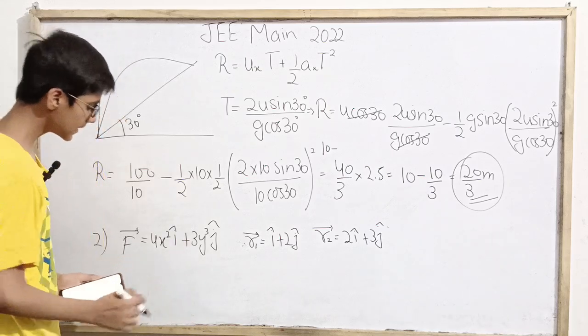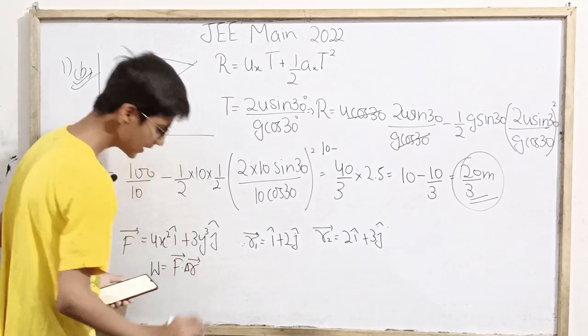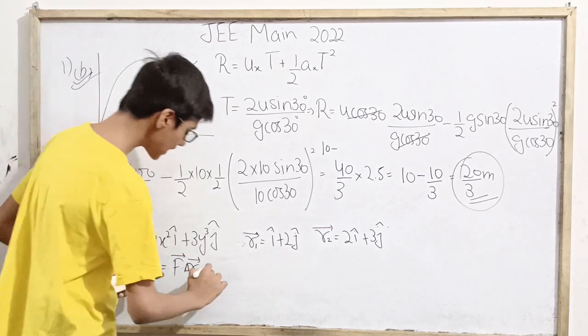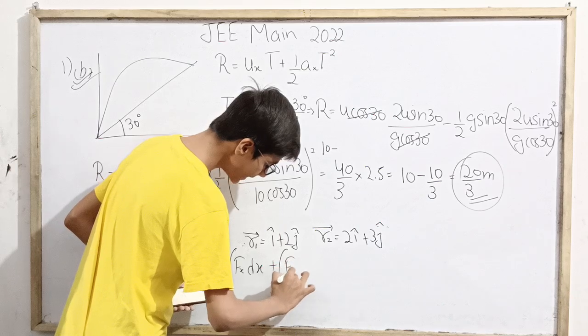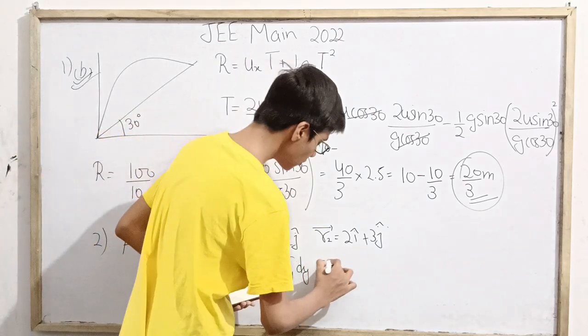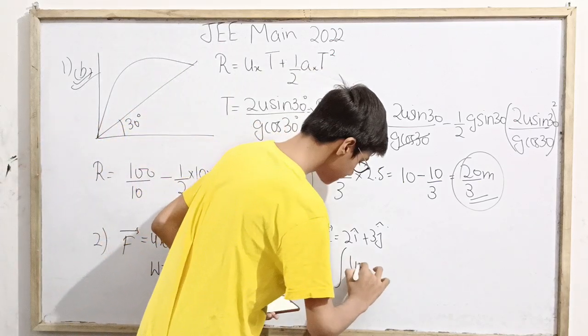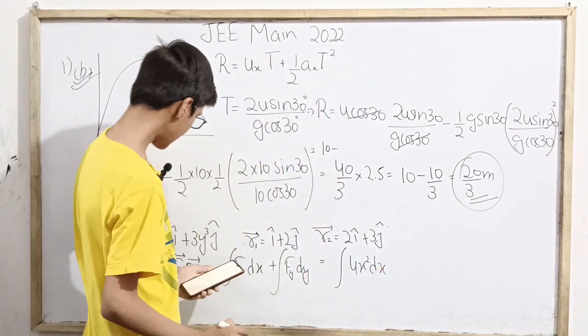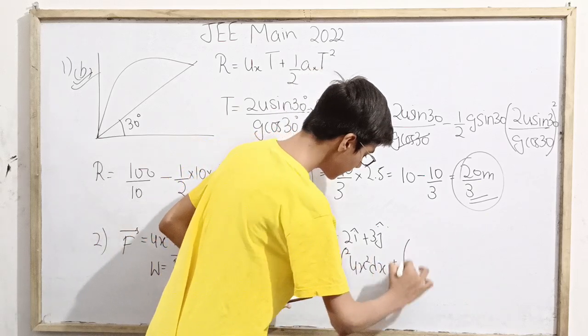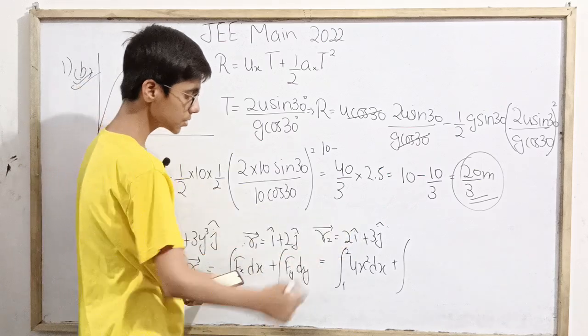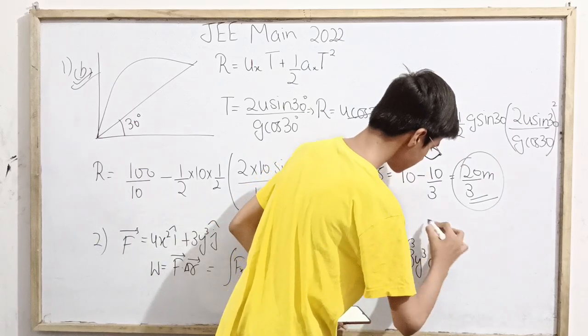Work done is vector F dot delta vector r. When the force is variable, we represent it as: integral Fx dx plus integral Fy dy. This becomes integral 4x squared dx from x equals 1 to 2, plus integral from y equals 2 to 3 of 3y cubed dy.